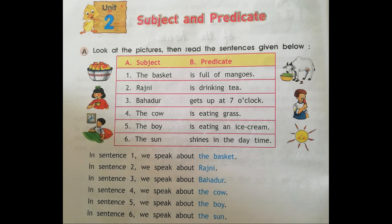Subject: the basket. Predicate: is full of mangoes. Subject: Rajni. Predicate: is drinking tea. Subject: Bahadur. Predicate: gets up at 7 o'clock. Subject: the cow. Predicate: is eating grass. Subject: the boy. Predicate: is eating an ice cream. Subject: the sun. Predicate: shines in the daytime.